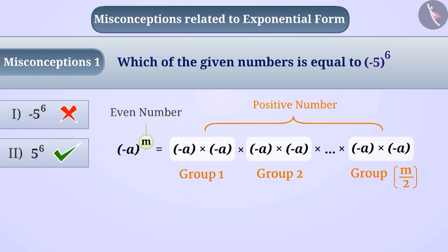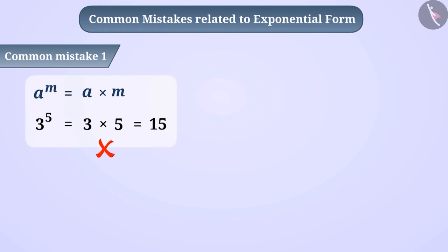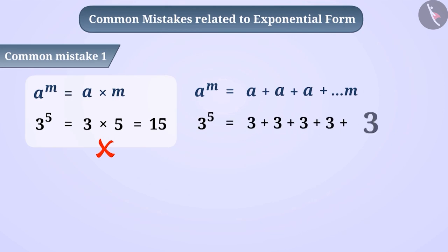Common Mistake 1: Some children understand that to find the value of a number from an exponential form, the base and the power are multiplied. For example, to get the value of 3 raised to the power of 5, children often multiply 3 by 5 and get the result 15 — this is a wrong understanding. Similarly, some children add the base as many times as the exponent. For instance, to get the value of 3 raised to the power of 5, children add 3 five times to get 15. This is also a wrong understanding.